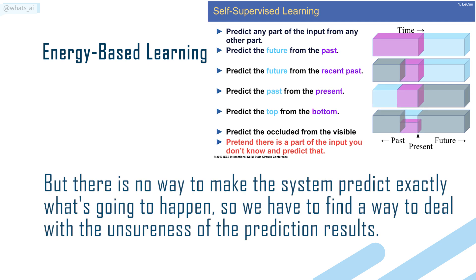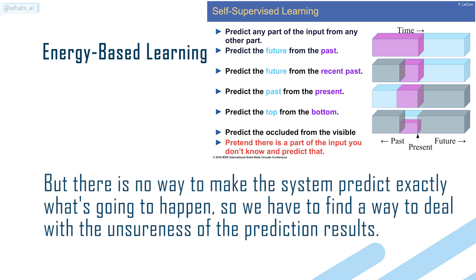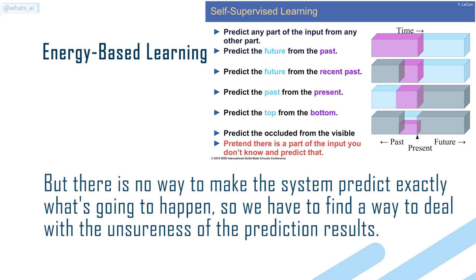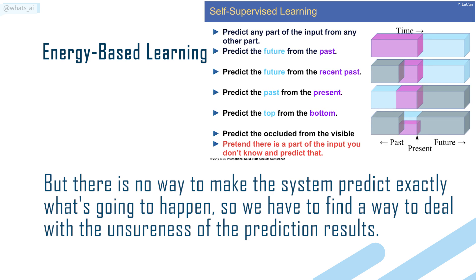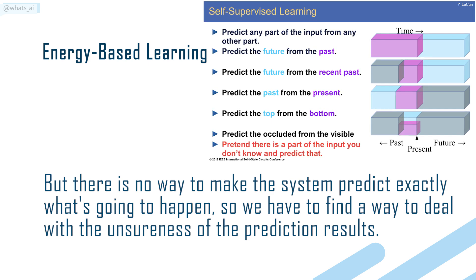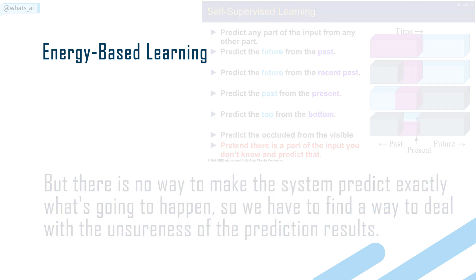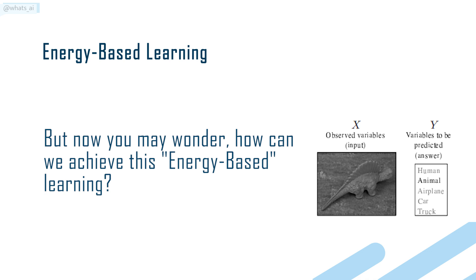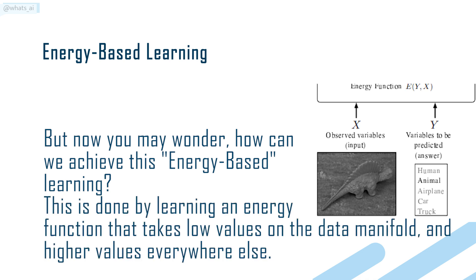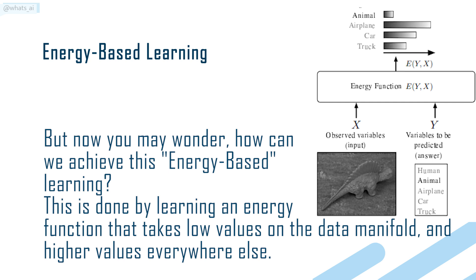But there is no way to make a system predict exactly what's going to happen, so we have to find a way to deal with the uncertainty of the prediction results. How can we achieve this energy-based learning? This is done by learning an energy function that takes low values on the data manifold and higher values everywhere else.